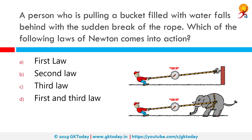A person who is pulling a bucket filled with water falls backward with a sudden break of the rope. Which of Newton's laws comes into action? The correct answer is the third law. Newton's third law states that for every action there is an equal and opposite reaction. Since the person was pulling the rope, they were exerting a force on it, and the rope was exerting the same force back on the person. The moment the rope breaks, that reaction force stops, so the person is left pulling at nothing and falls behind. In every interaction, there is a pair of forces acting on two interacting objects.